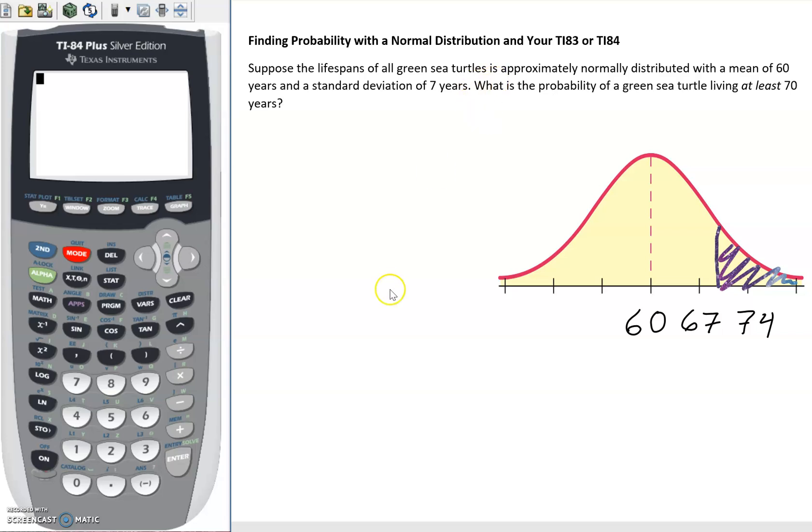One is to find our z-score and then use a table. I know that my z-score just requires me to figure out how far is my observation of interest. So 70, how far is that from the mean? 70 minus 60, and it should be positive because it's 10 above the mean, and then we're going to divide by our standard deviation of 7.